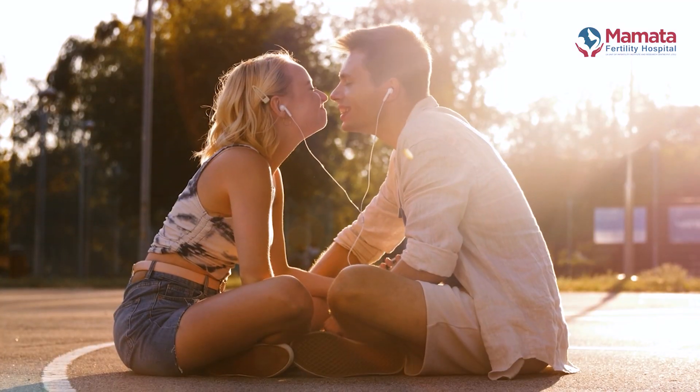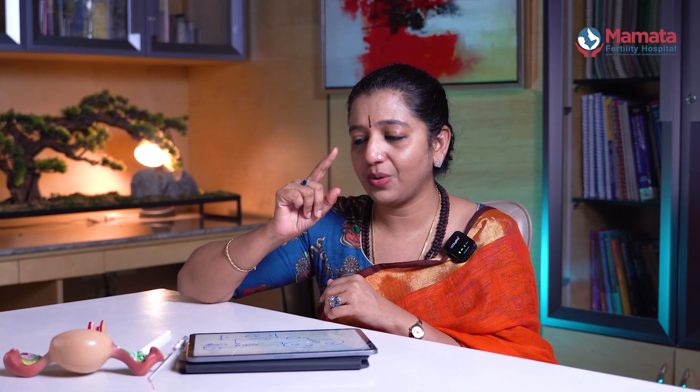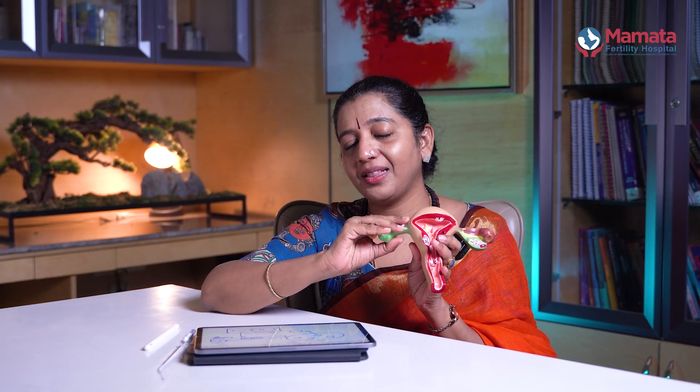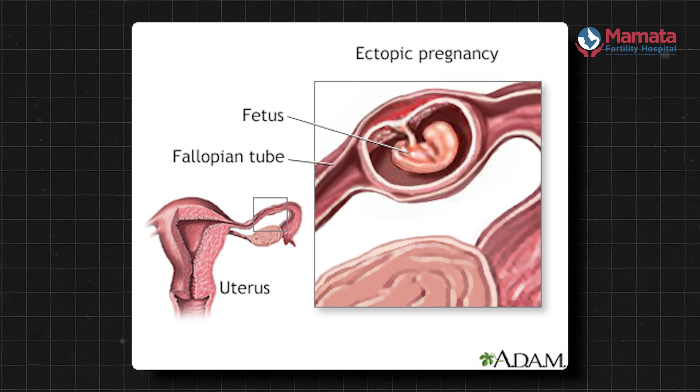Another thing to note is that before marriage, if a person has had multiple sexual partners, there is a higher risk of sexually transmitted infections. If there are many sexually transmitted infections, this increases the risk of ectopic pregnancy in natural pregnancies. These infections can also damage future fertility.